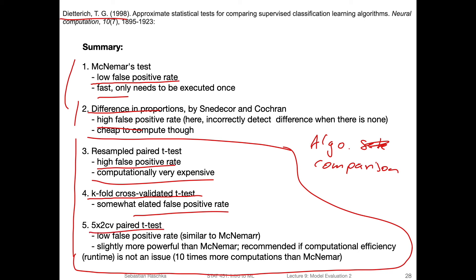Another method is the five times two cross-validated paired t-test. This is a technique that was proposed in this paper. This one has a low false positive rate, so that is nice. It's similar to McNemar's test, and it's even a little bit lower, I think. And what's also nice, it's slightly more powerful than McNemar's test. So statistical power would be rejecting the null hypothesis if the alternative hypothesis is true, so correctly rejecting the null hypothesis - detecting that there's a difference. So correctly detecting the difference, that would be the statistical power.